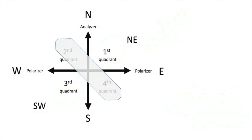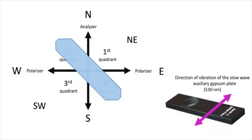You can confirm this interpretation by rotating the crystal 90 degrees. This time, the retardation color should be the second order blue. Why?